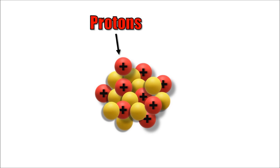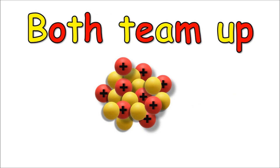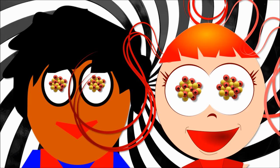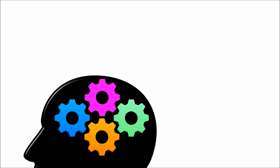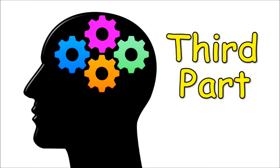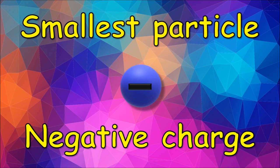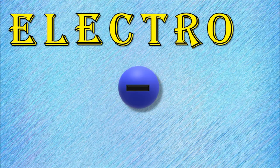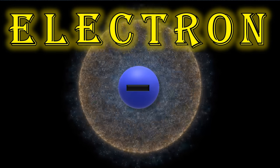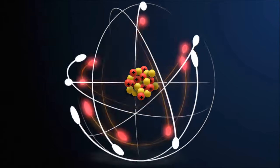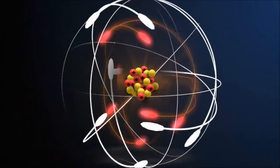Protons and Neutrons both team up to make the center of the atom — the Nucleus! But now we can't forget the third part. It's the smallest particle with a negative charge called Electron. Electrons spin and spin around the Nucleus of the atom, just like an orbit.